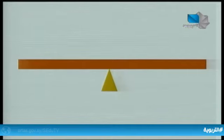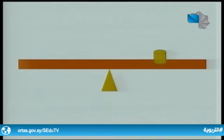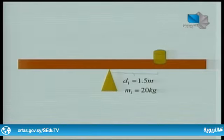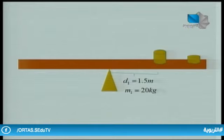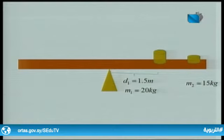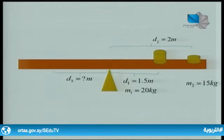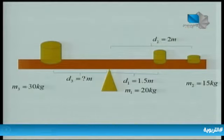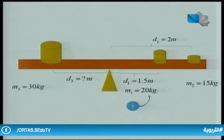في مثال آخر: ساق خشبية يمكن أن ترتكز حول محور يمر من منتصفها. وُضع على أحد جهتيها جسم كتلته 20 كيلوغرام يبعد عن محور الدوران 1.5 متر، وجسم آخر كتلته 15 كيلوغرام يبعد عن المركز 2 متر. نريد إيجاد البعد الذي يجب أن نضع عنده جسماً ثالثاً كتلته 30 كيلوغرام لتبقى الجملة في حالة توازن. نختار الاتجاه الموجب بعكس عقارب الساعة.